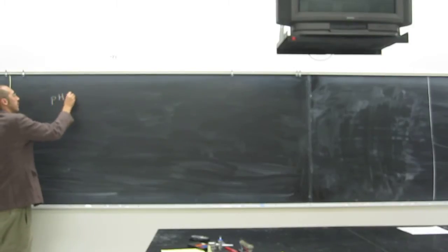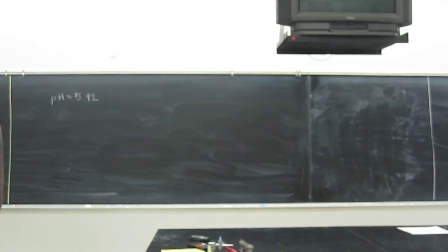This problem: calculate the proton concentration of a solution in which the pH is 5.92. So this problem gives us the pH, 5.92, and we also know the equation for pH.